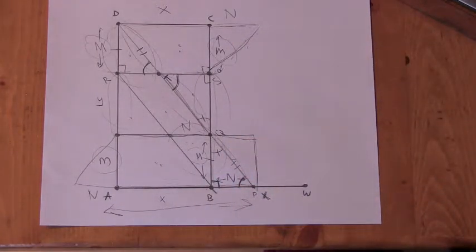So it doesn't say the rectangle has a side length of AP. It says the side of the rectangle is AP. So that means one of the corners of the rectangle, the new rectangle, is at A and another one's at P.